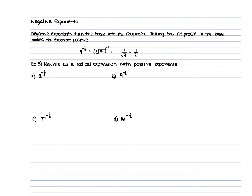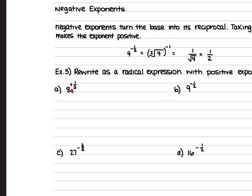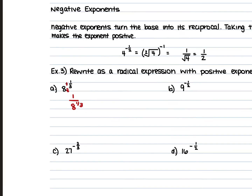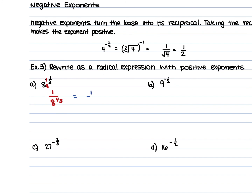Looking at example 3a, we're rewriting using positive exponents. We have 8 to the power of negative one-third. This is the same as taking the reciprocal of that 8 to turn the power positive, giving us 1 over 8 to the one-third power. If we were writing it as a radical expression, this would also equal 1 over the cube root of 8. Note that you would not be able to leave a radical in the denominator, but right now we're just purposely rewriting using positive powers.